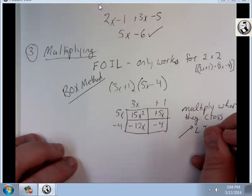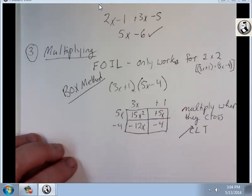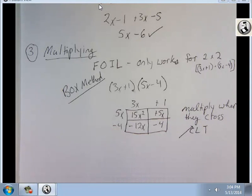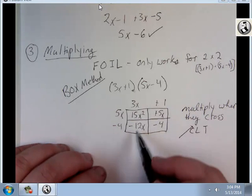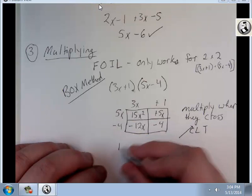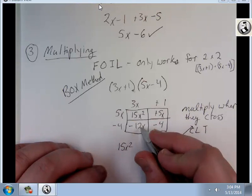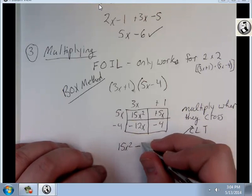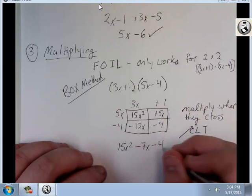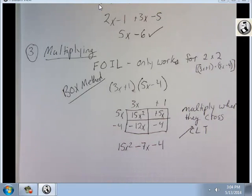And the ones that are diagonal upright, those are my like terms. So my answer would be 15x squared minus 12 plus 5 is minus 7x minus 4. You would get the same thing for this one if you foiled. But you can't foil something like this next one I'm going to show you.